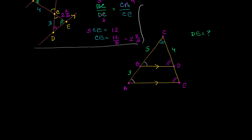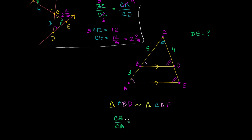It's important to write the similarity in the right order. We now know that triangle CBD is similar to triangle CAE. That means the ratio of corresponding sides is constant. So we know the ratio of CB to CA is going to be equal to the ratio of CD to CE.